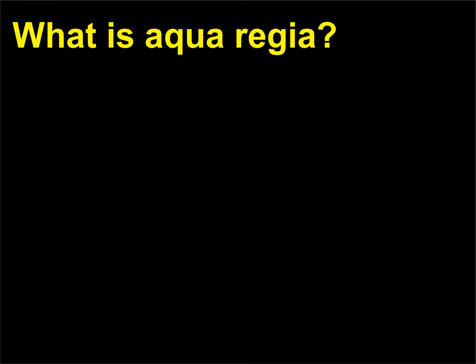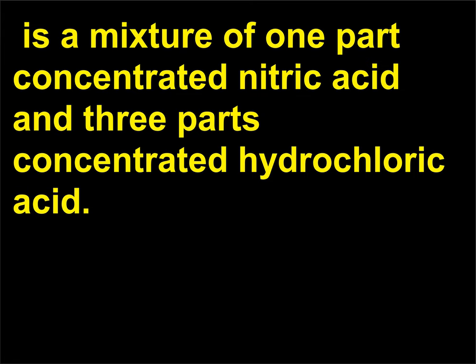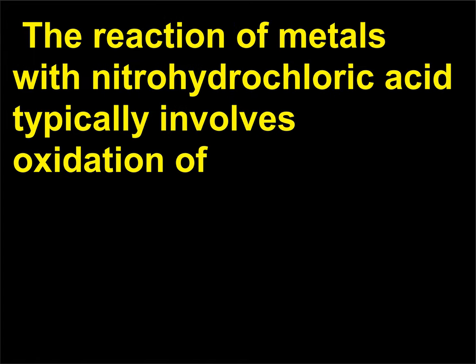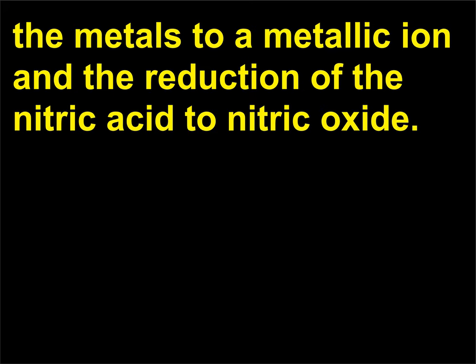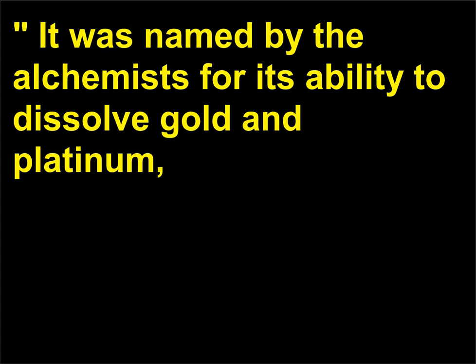What is aqua regia? Aqua regia, also known as nitrohydrochloric acid, is a mixture of one part concentrated nitric acid and three parts concentrated hydrochloric acid. The chemical reaction between the acids makes it possible to dissolve all metals except silver. The reaction typically involves oxidation of the metals to a metallic ion and the reduction of nitric acid to nitric oxide. The term comes from Latin and means 'royal water'; it was named by the alchemists for its ability to dissolve gold and platinum, which were called the noble metals.